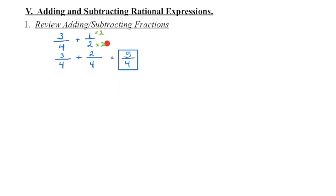2 divided by 2 is 1. When I multiply by 1, I'm not changing the value. And then we add the numerators together, the denominator stays the same, and if possible, you can reduce.